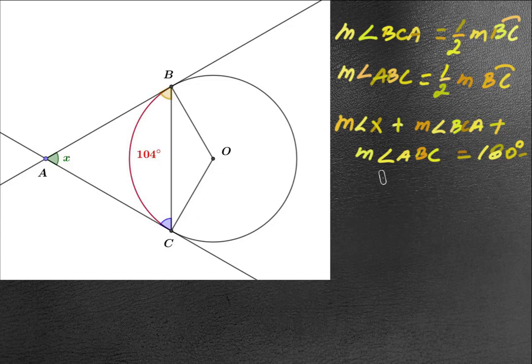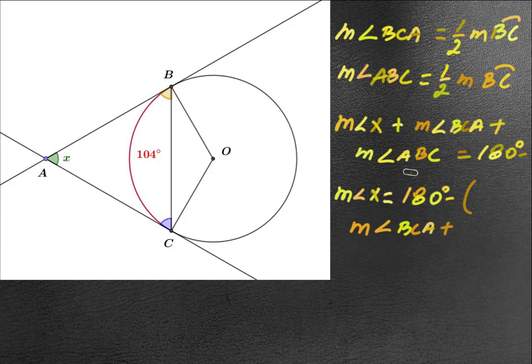just deduct the measure of X from this relationship. We can say the measure of angle X here is equal to 180 degrees minus the sum of the two other angles—measure of angle BCA plus measure of angle ABC.